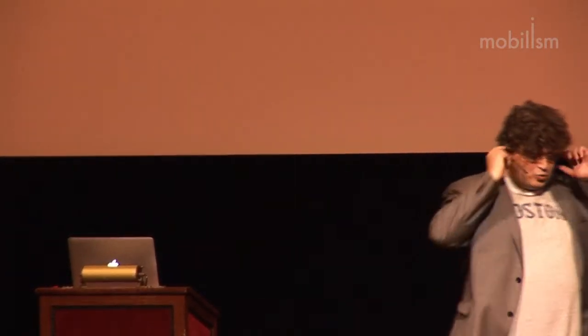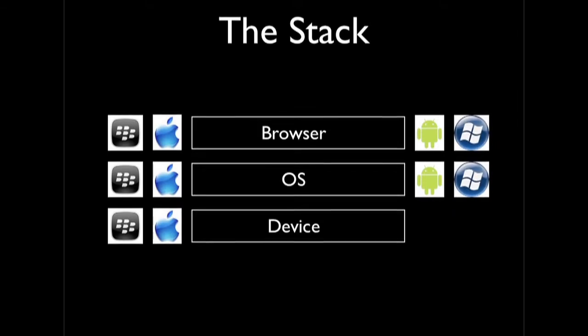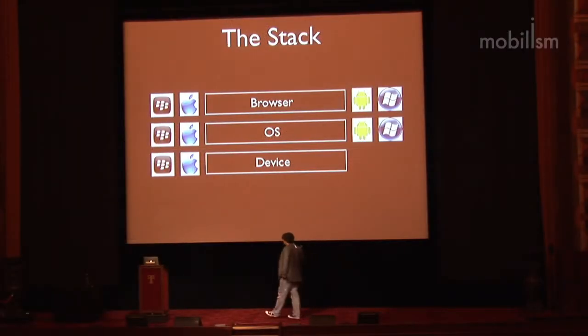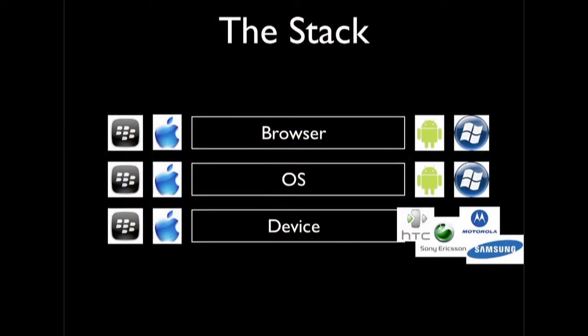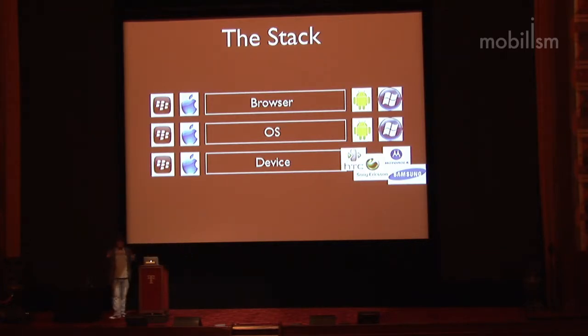But it's not really the dominant business model out there. The other business model is basically shown by Android. What Google does is it doesn't create devices - it creates an operating system, including a browser, and basically gives it away to whoever wants it. The other player that does that is Microsoft with Windows Phone - it's exactly the same business model: we've got an operating system for you in case you need it for your devices. That's why you see a lot of device vendors using both Android and Windows Phone, although Android has sold far better.